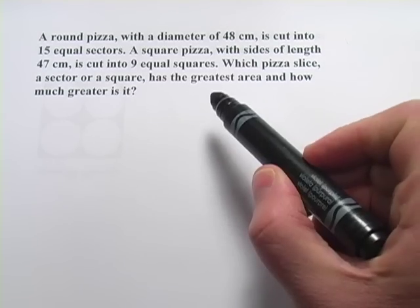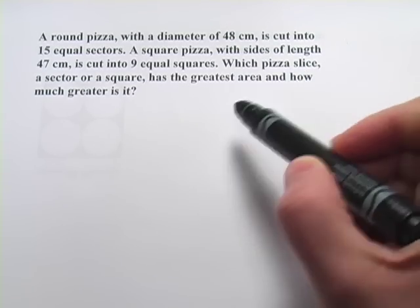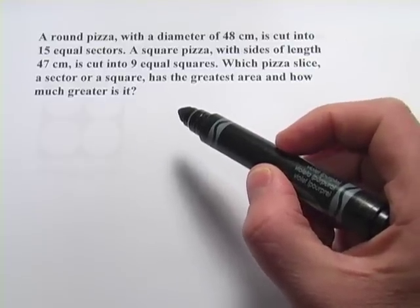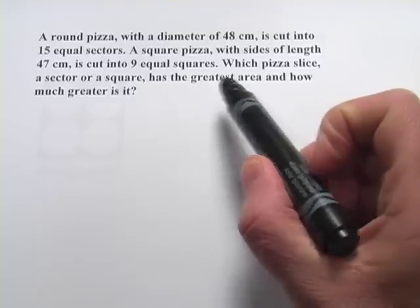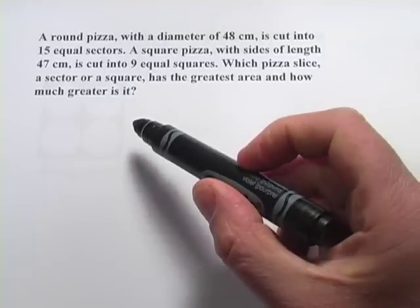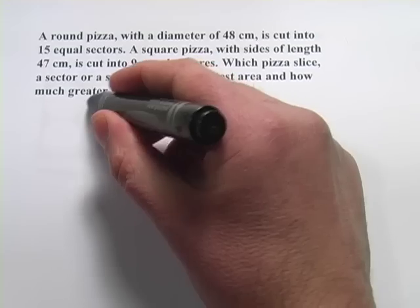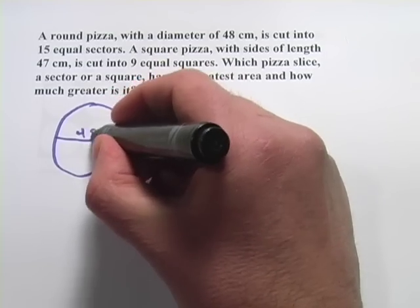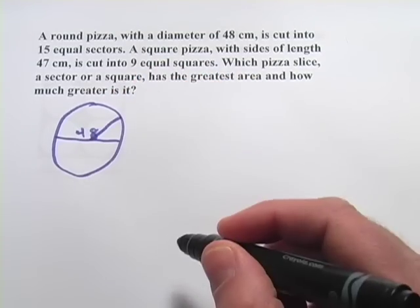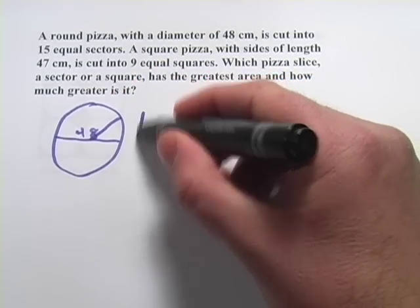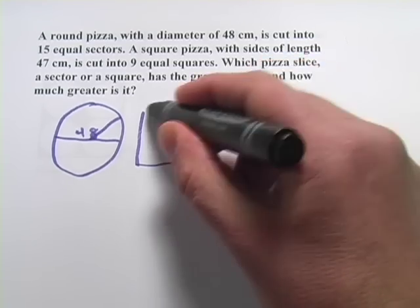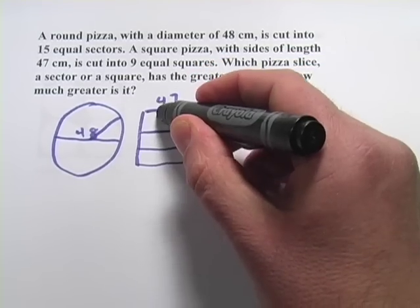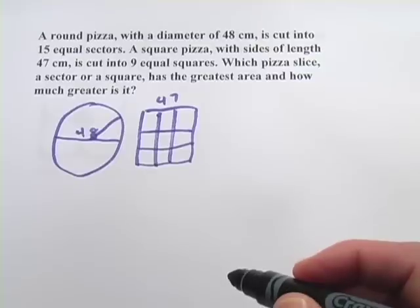The first one says a round pizza with a diameter of 48 centimeters is cut into 15 equal sectors, so 15 triangular or pie-shaped pieces. A square pizza with sides of length 47 centimeters is cut into nine equal squares. So you've got a circle that has a diameter of 48 and it's cut into these 15 pieces. Then you've got a square that's a little bit smaller than the circle, that's 47, and it's cut into nine equal pieces. They did a tic-tac-toe kind of thing and cut it into square pieces.